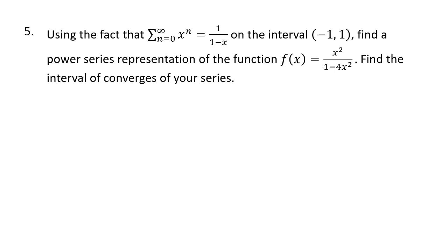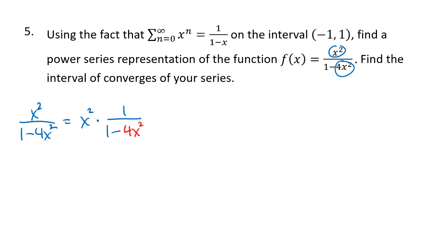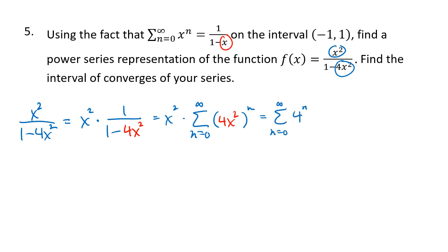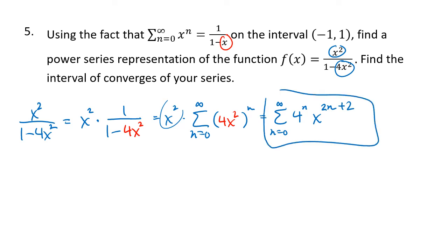For the next example, we want to represent x² divided by (1 - 4x²) as a power series. We plug 4x² into the geometric series formula, and multiply by x² to get the x² on top. So x² times 1 over (1 - 4x²) equals x² times the sum from n=0 to infinity of (4x²) to the n. When we simplify, that gives us 4 to the n times x to the 2n, and multiplying by x² adds 2 to the exponent of x. That's our power series formula for this function.